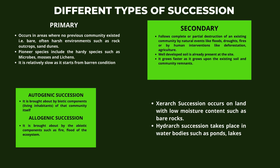Autogenic succession is where change is brought about by biotic components — the living inhabitants — of that community itself, while allogenic succession is brought about by abiotic components such as fire and floods of the ecosystem. Xerarch succession occurs on land with low moisture content such as bare rocks, while hydrarch succession takes place in water bodies such as ponds and lakes.